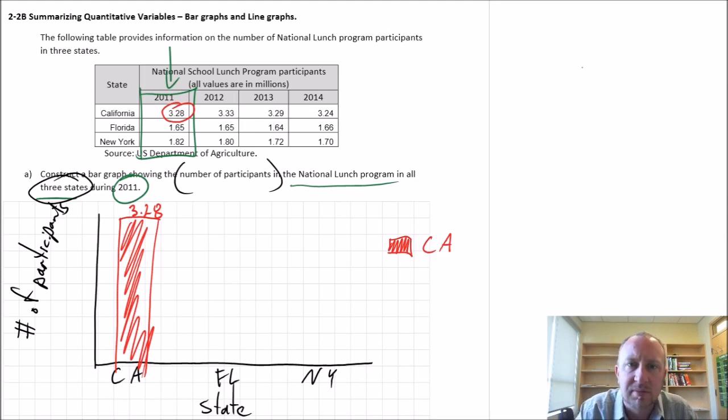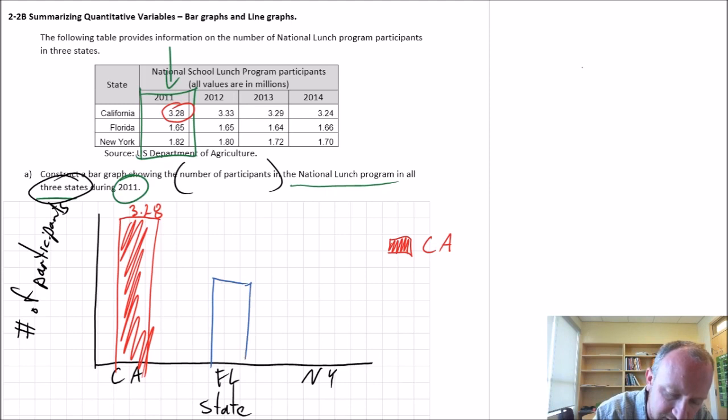Somewhat redundant, as I already have all of my labels on the x-axis, but we can add a legend here, too, if we want to make things perhaps more clear. Now for Florida, the value is 1.64. So roughly half the size of California, half the magnitude. So let's make a bar that's about half the size. 1.65. And blue, this is Florida.